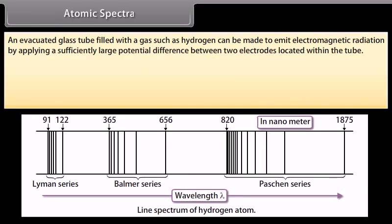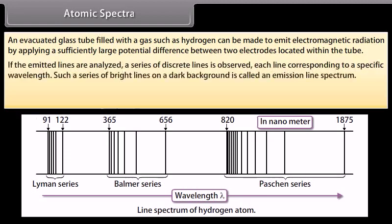Atomic spectra. An evacuated glass tube filled with a gas such as hydrogen can be made to emit electromagnetic radiation by applying a sufficiently large potential difference between two electrodes located within the tube. If the emitted lines are analyzed, a series of discrete lines are observed, each line corresponding to a specific wavelength. Such a series of bright lines on a dark background is called an emission line spectrum.